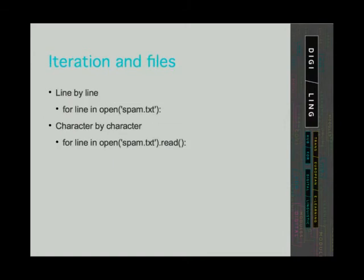To iterate line by line, we can say: for line in open and state the name of the file, for example, spam.txt. However, it is also possible to iterate character by character in a file. We can do this by using the read method — for line in open('spam.txt') and then call the read method to iterate character by character.